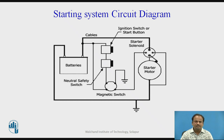This is the schematic diagram of the starting system circuit, in which there is a battery, a neutral safety switch, an ignition switch or starting button, a magnetic switch, a starter solenoid, and the starter motor.